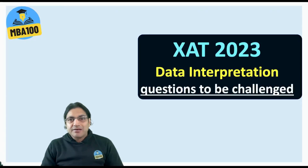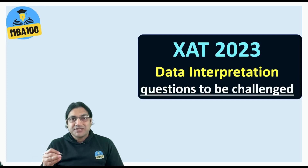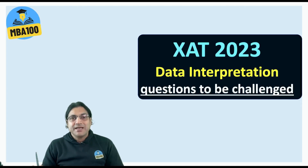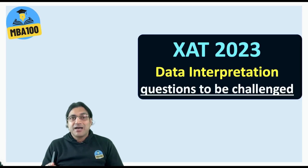I'm Vijay Kalyanjha from MB100 and here we are going to discuss a data interpretation set that appeared in XAT 2023 that is completely erroneous. You must challenge it. Yesterday I took a session and told you about two erroneous questions in XAT 2023 — one was based on prime numbers and the other on three fielders in the slip cordon of a cricket match. The triangle was not possible and X and Y were not possible in the prime number question.